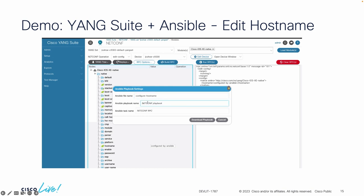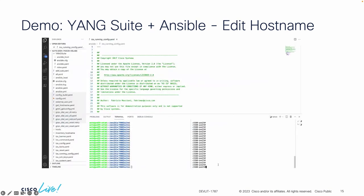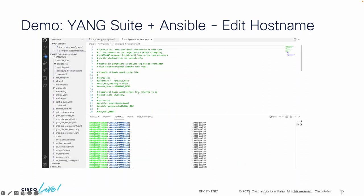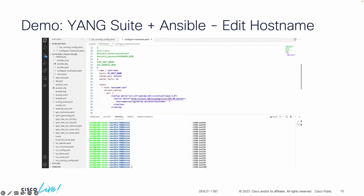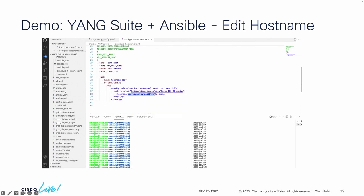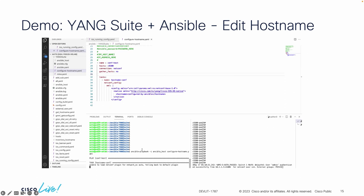Here we can add in details about the name of the file and our Ansible tasks, or we can use the defaults already provided. When we download this Ansible playbook, we can go ahead and look at our Ansible environment and set up configurations. This is the file that Yang Suite generated for us — at the top there are comments in green telling us how to use this file. The main thing is to change the hostname to match what we've provided in our Ansible config file.